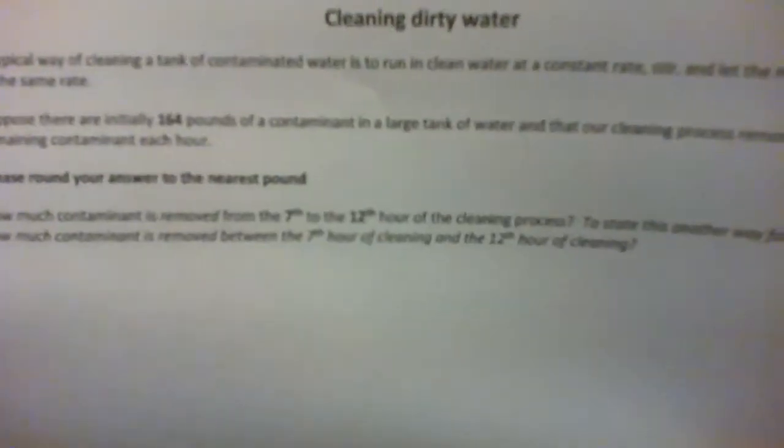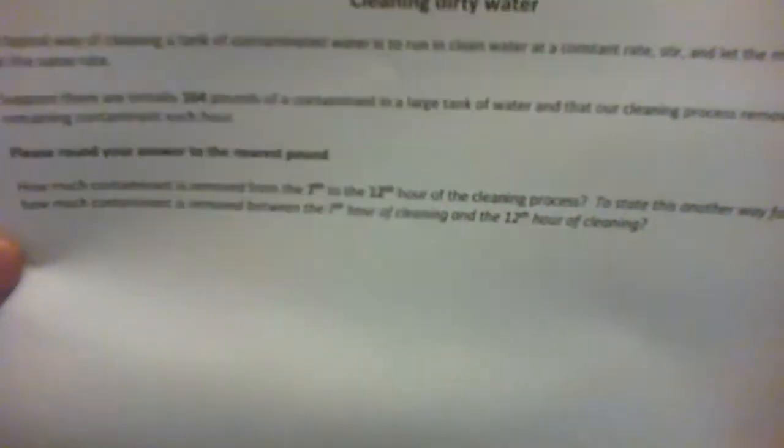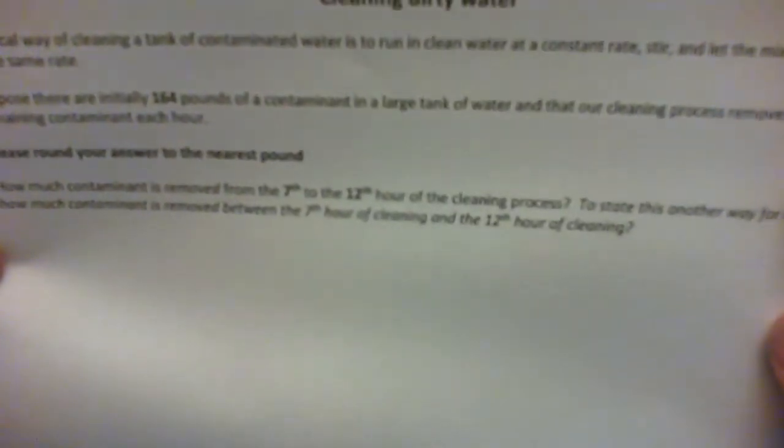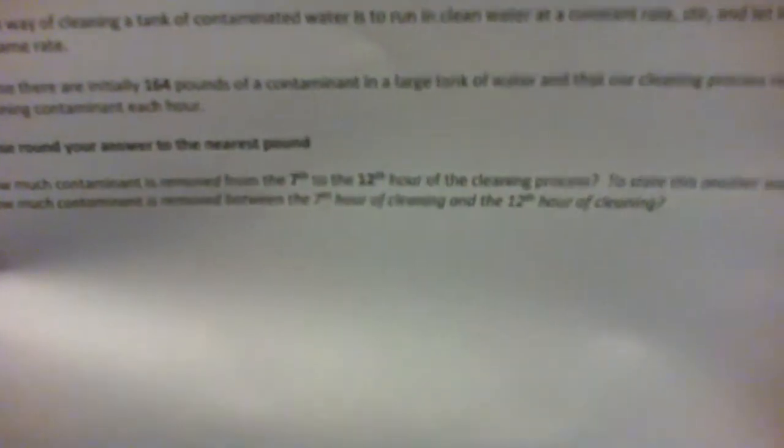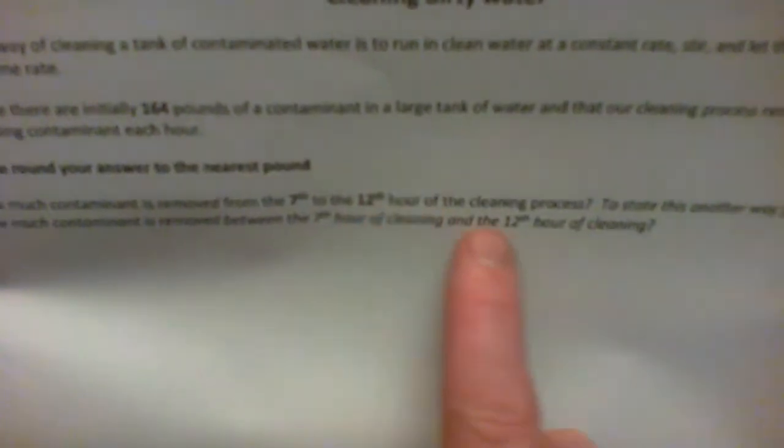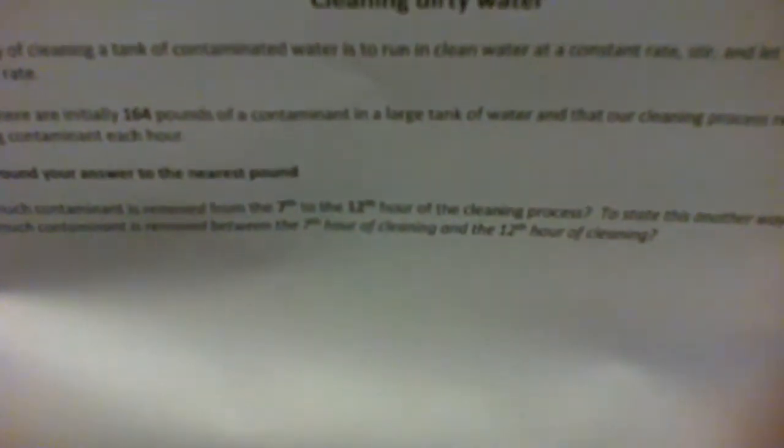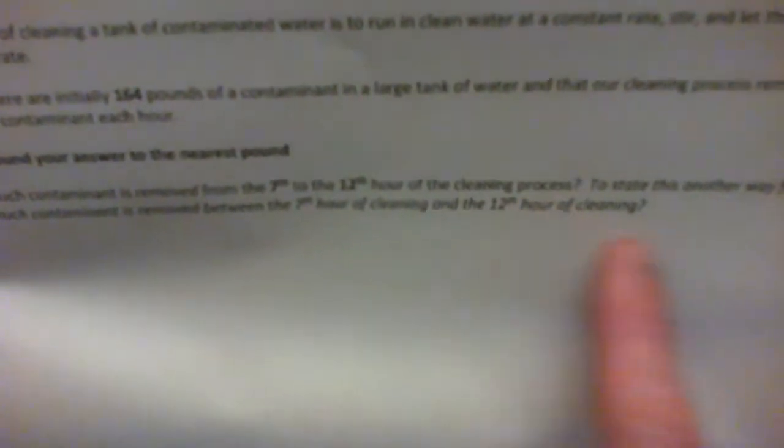In this example, there are initially 164 pounds of contaminant in a large tank of water. Our cleaning process removes 10% of the remaining contaminant each hour. So how much contaminant is removed from the 7th to the 12th hour of the cleaning process? To state this another way, how much contaminant is removed between the 7th and 12th hour of cleaning?